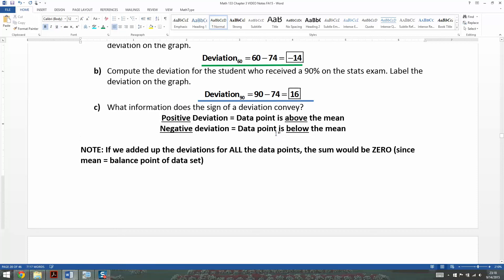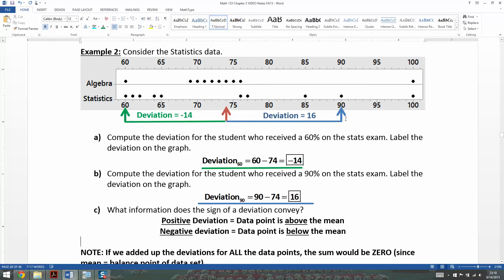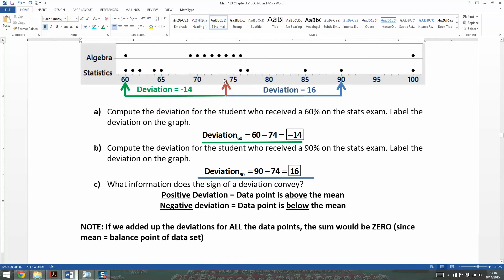Okay, now notice what's going to happen. If you did this for all the data points, we just did two. We did this one right here at 60, and this one right here at 90, but if you did it for 60, 61, 62, 64, 65, 70, all of these...